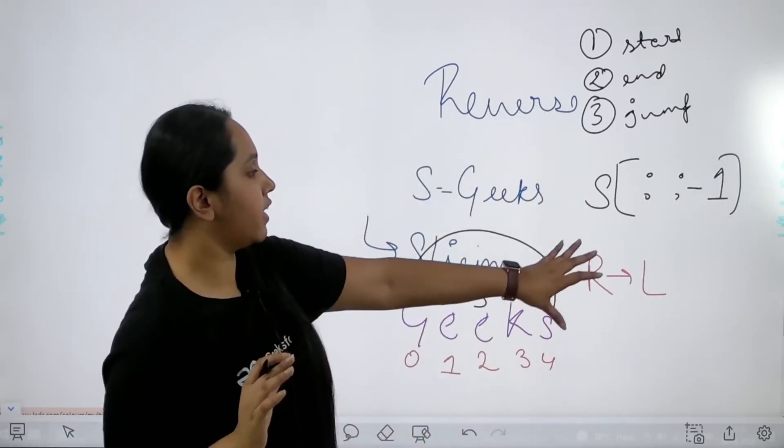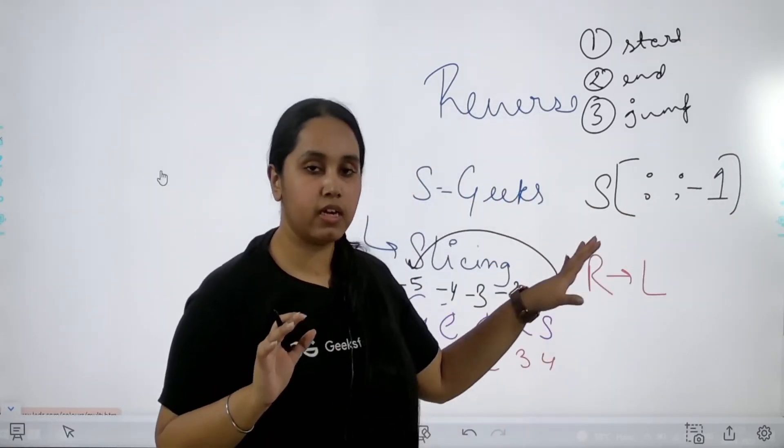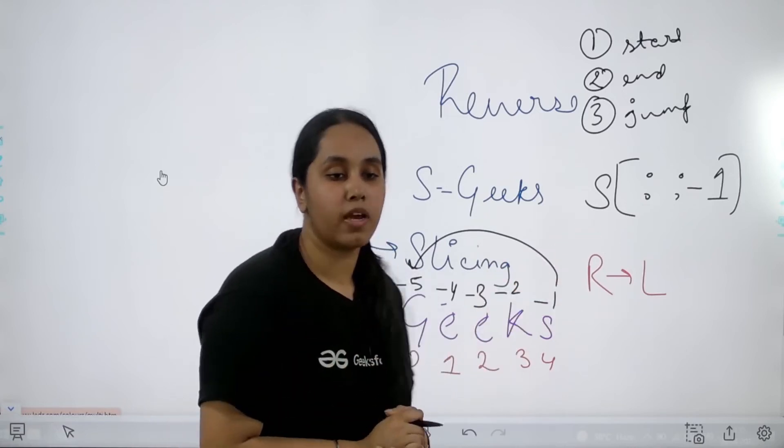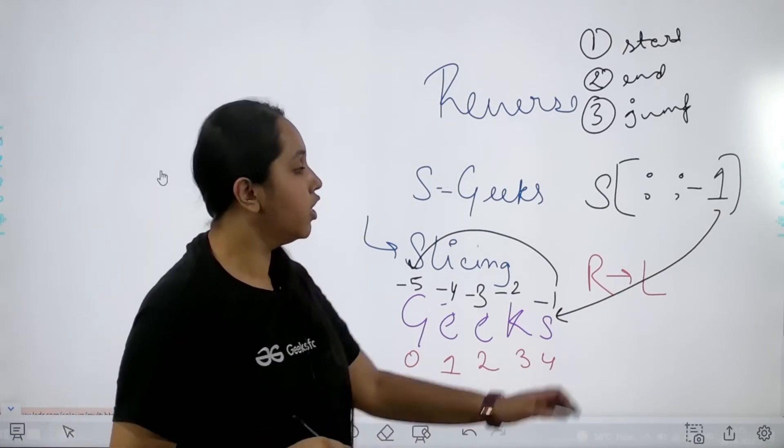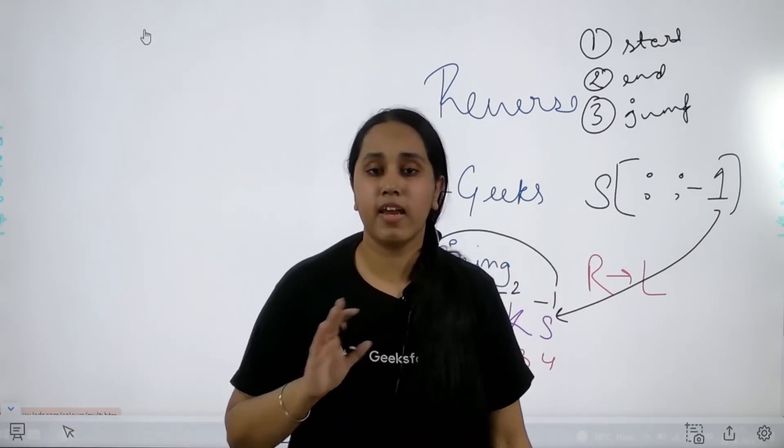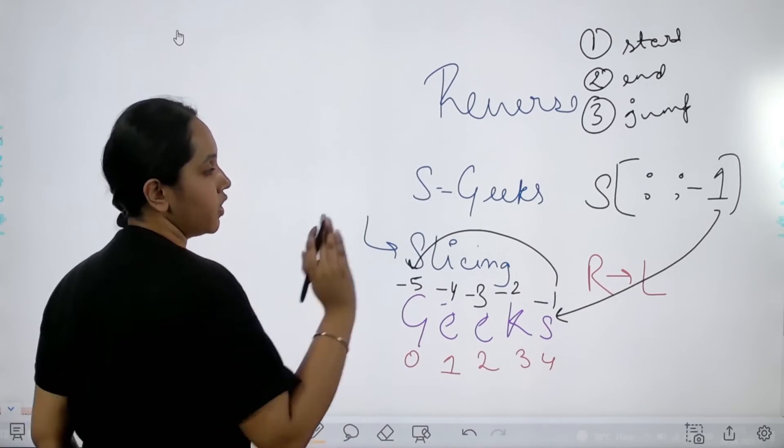So when I specify minus 1 over here, it means that you need to start with the negative indexes. I do not need to mention the start value, the end value. I do not need to do any of that.